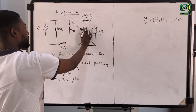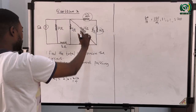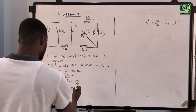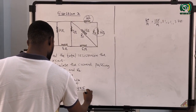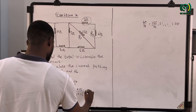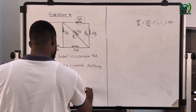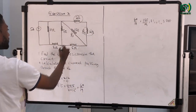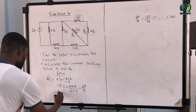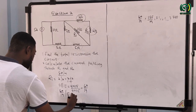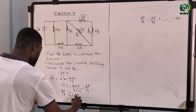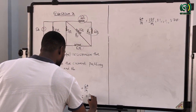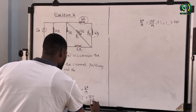The 4-ohm resistor is in parallel with the 15-ohm resistor. Whenever resistors are in parallel we solve them as: 4 times 15 over 4 plus 15, giving us 60/19. Now 60/19 is in series with the 5-ohm resistor, so we have 60/19 in series with 5 ohm. Adding them: 60/19 plus 5 gives us 155/19.